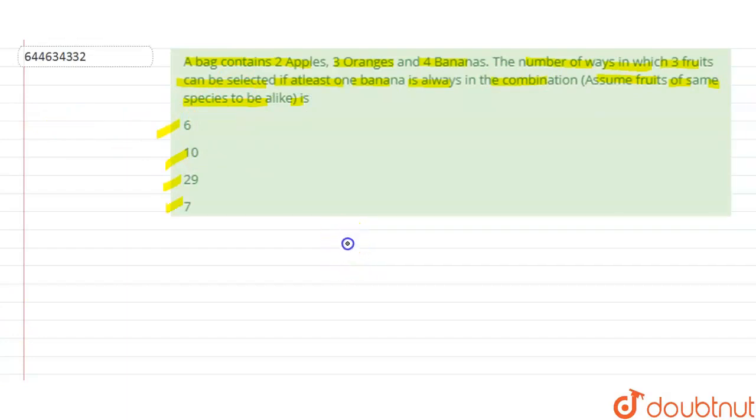We have 2 apples, 3 oranges, and 4 bananas. So we have to select 3 fruits in a combination in which there should be at least one banana. So we have to select from the other two fruits - we have to select two fruits other than banana. So now we have a few cases over here.